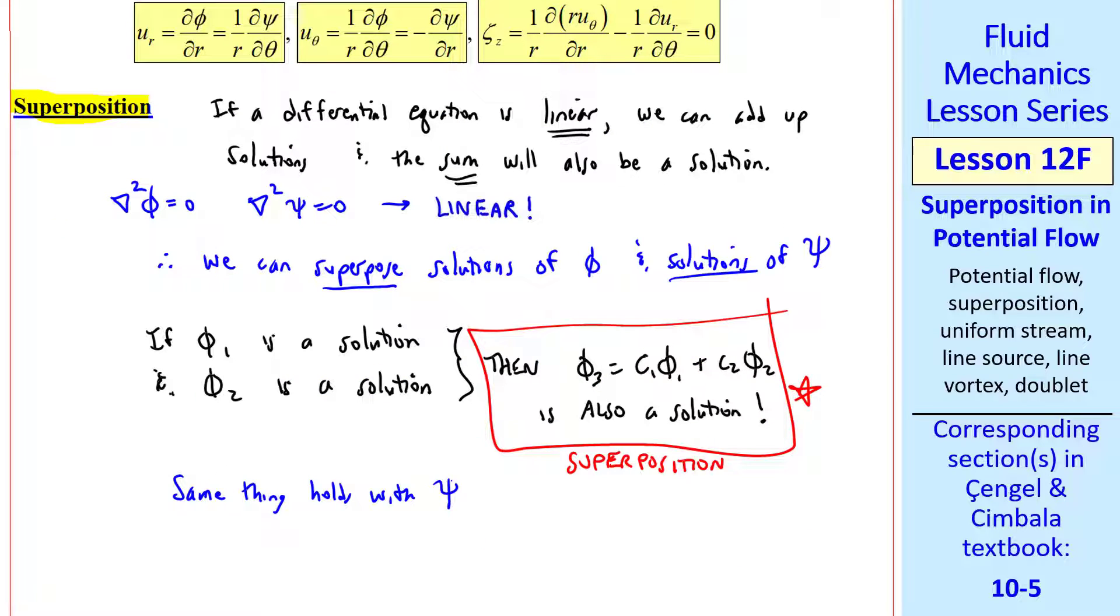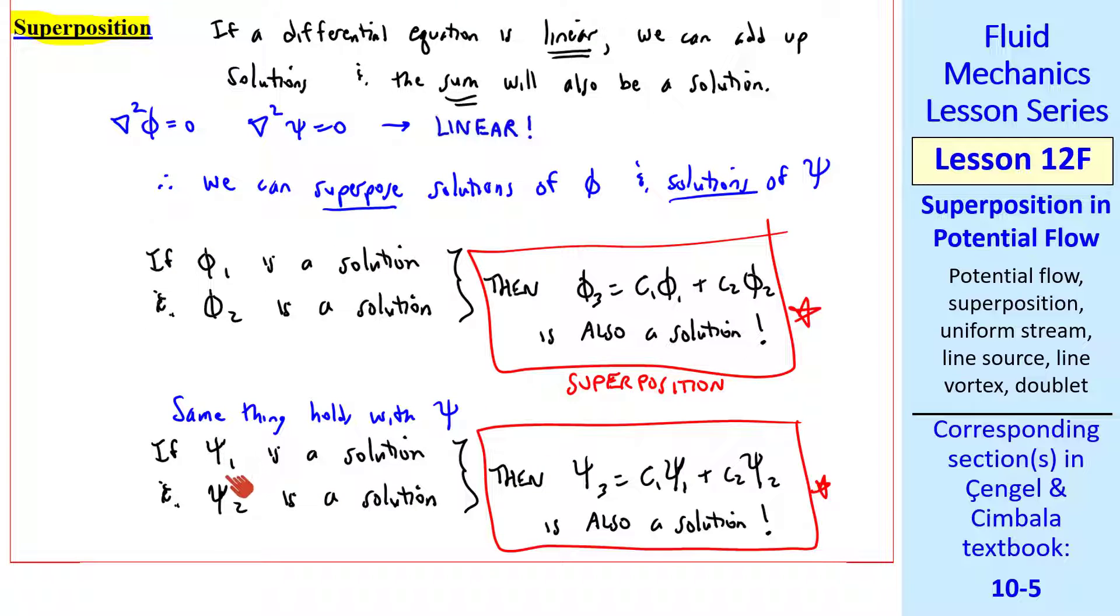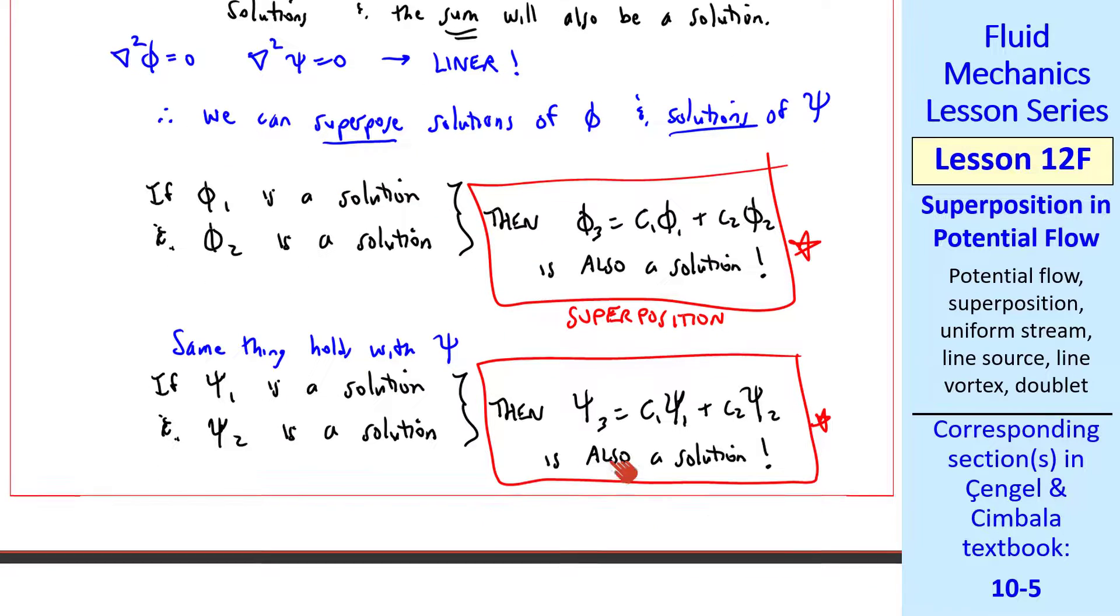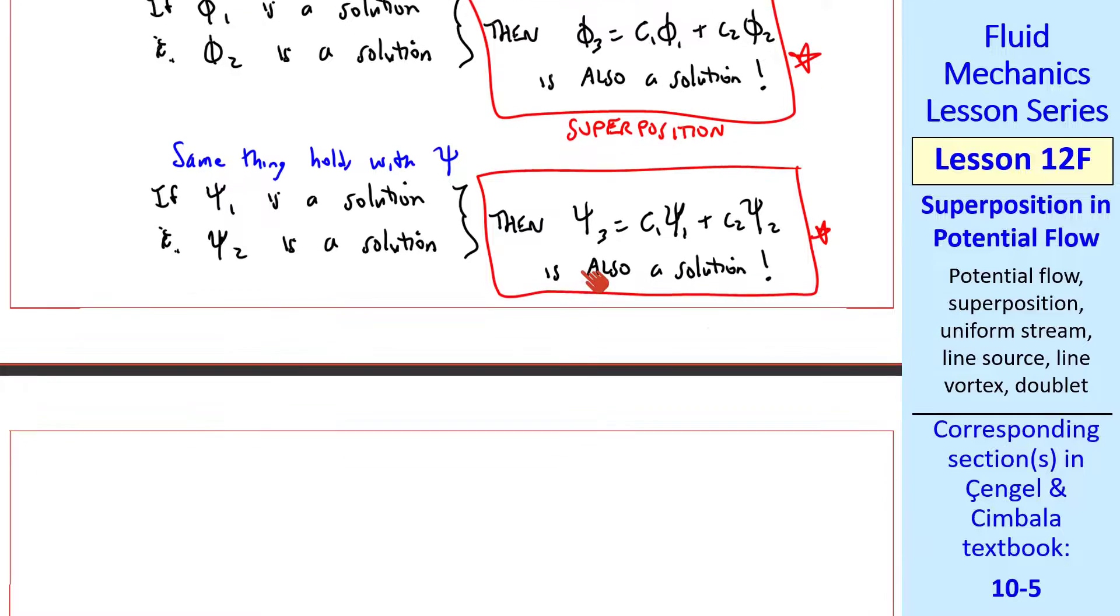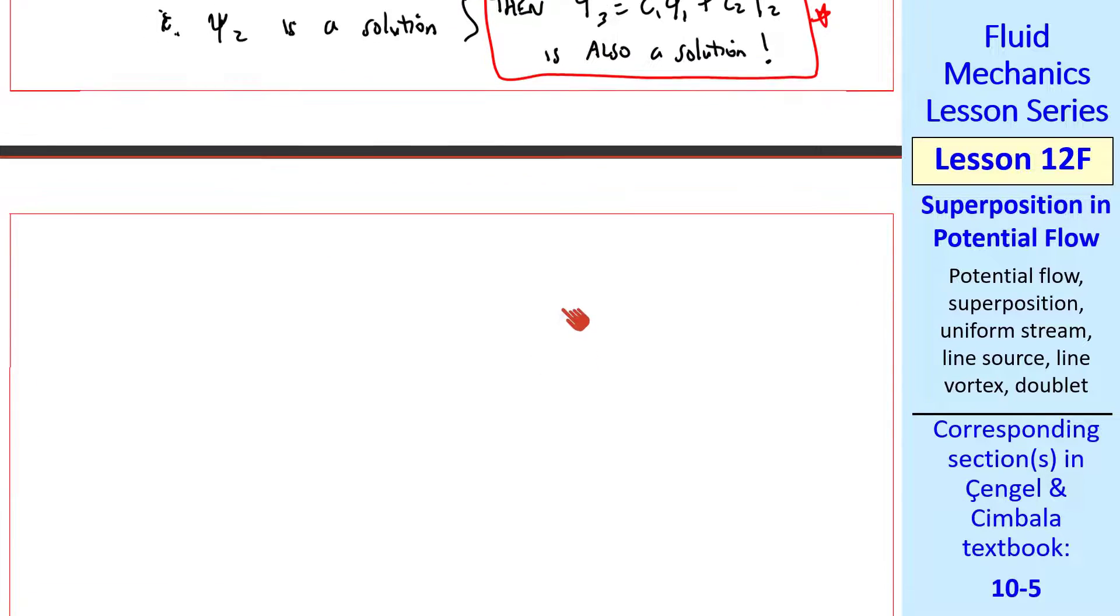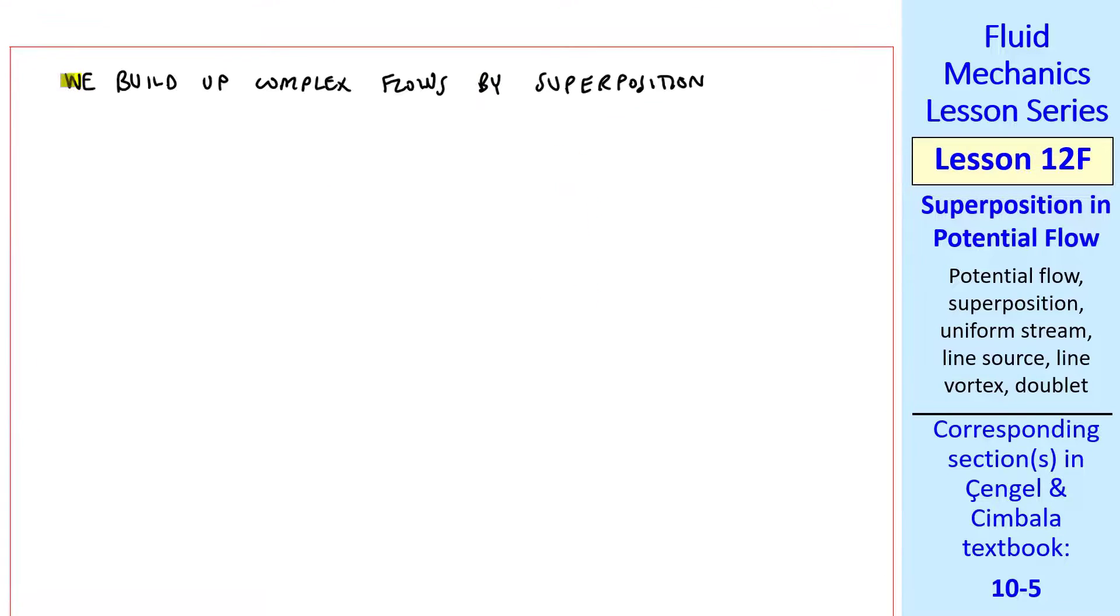The same thing holds with stream function psi, since the differential equation for psi is also linear. If psi1 is a solution and psi2 is a solution, the superposed psi3 is also a solution. We can build up complex flows by superposing simpler flows.